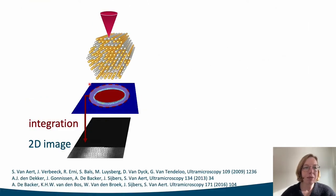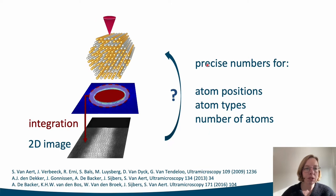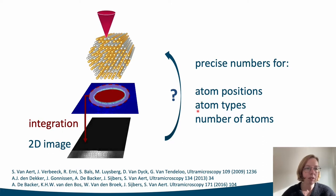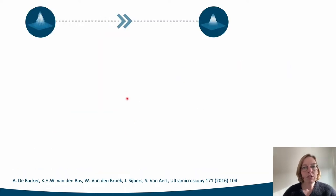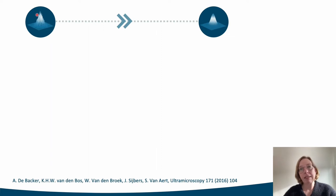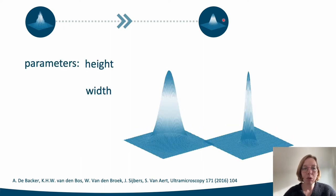We make use of scanning transmission electron microscopy. In a quantitative framework, the aim is to extract precise numbers for the unknown structure parameters, including the atom position, the atom types, and the number of atoms from the experimental images. Therefore, we make use of statistical parameter estimation theory. The concept is the use of a parametric model which is able to describe the underlying image intensities. Since our images are peaked at the atomic column positions, each intensity peak can be modeled as a Gaussian function of which we need to estimate the height, the width, and the position.